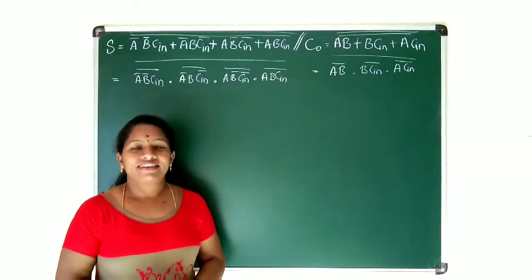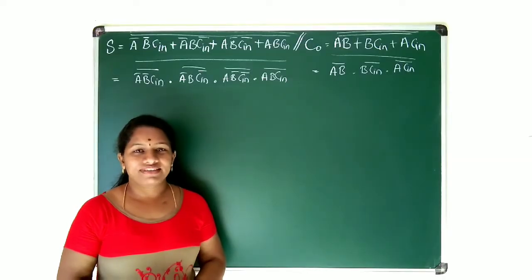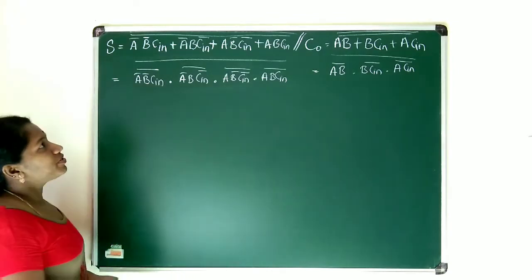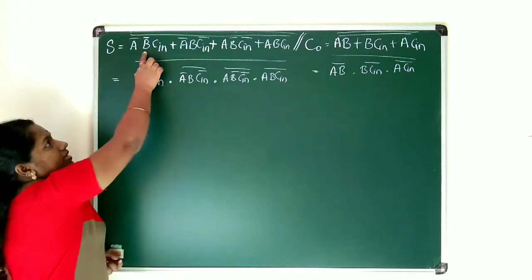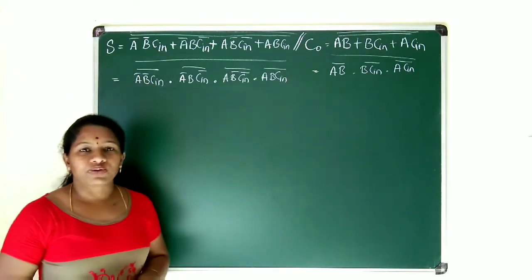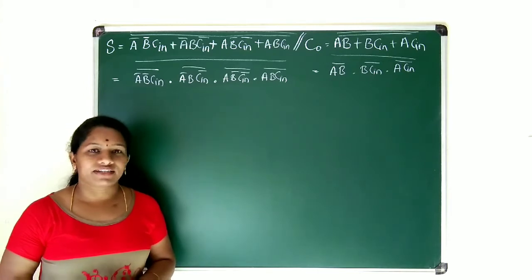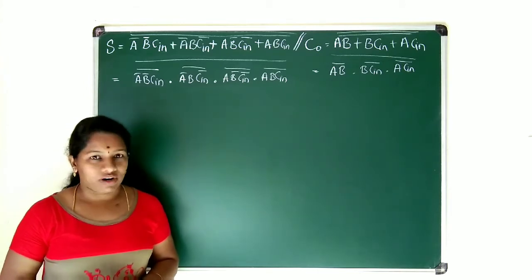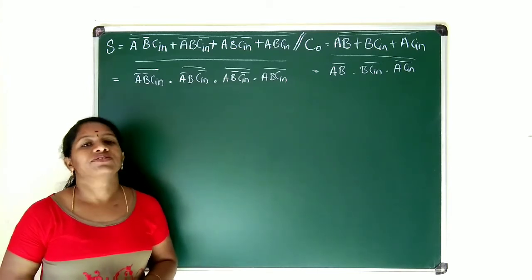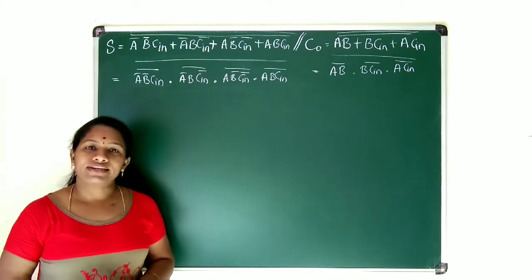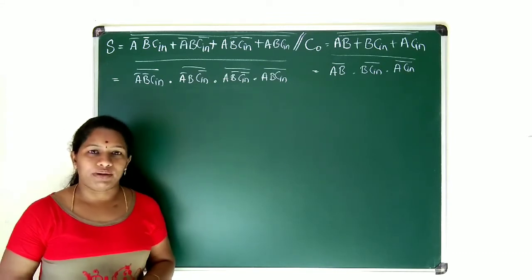Now, let's construct a full adder circuit by using NOR gates only. For that, I need to check the sum expression. In this sum expression, all the parameters are not related with plus — there are product signs, so I need to remove that. For that, I will be applying double complement.